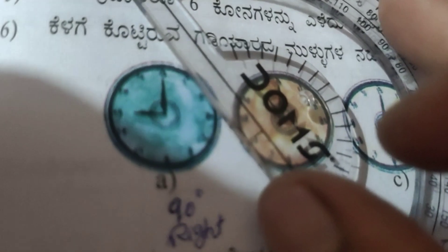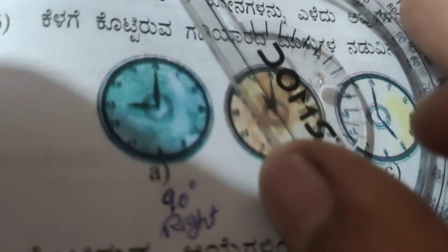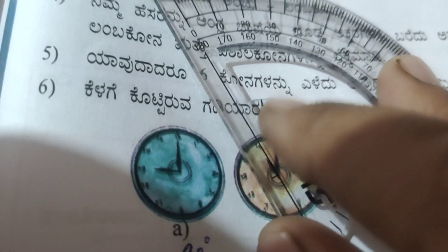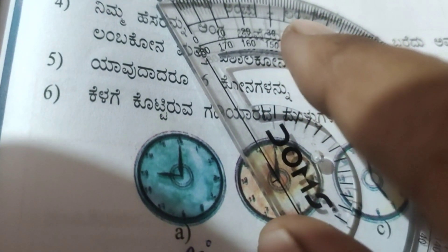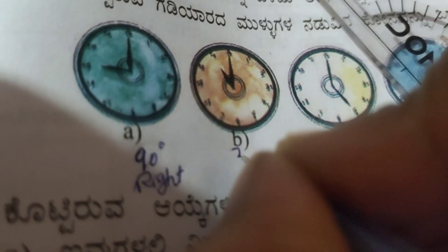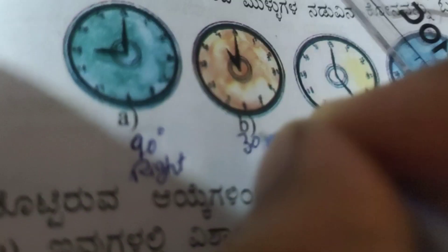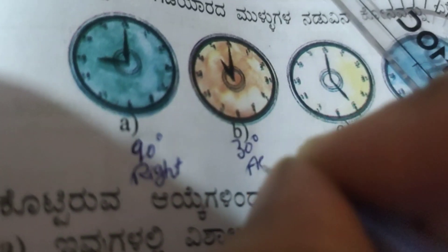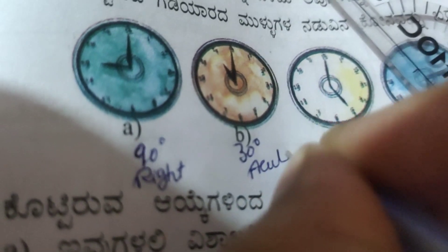For the second clock, measuring the angle between the hands gives 30 degrees. So this is 30 degrees, which makes it an acute angle.